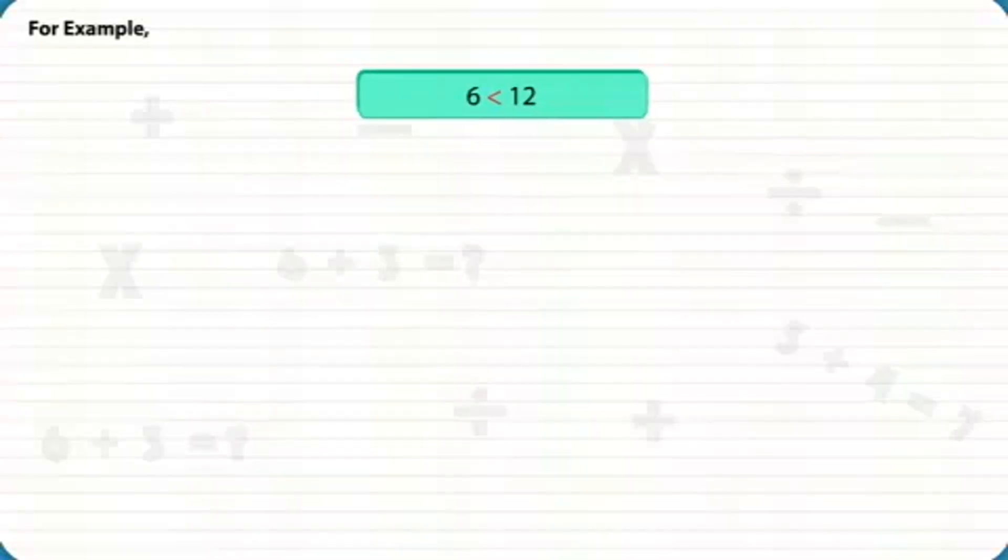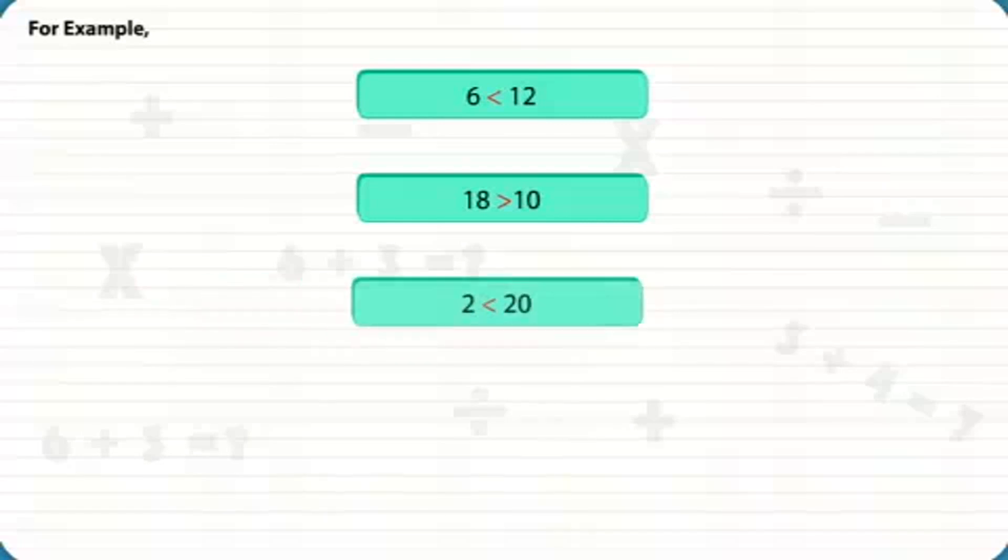For example, six is less than twelve. Eighteen is greater than ten. Two is less than twenty. Twenty is greater than thirteen.